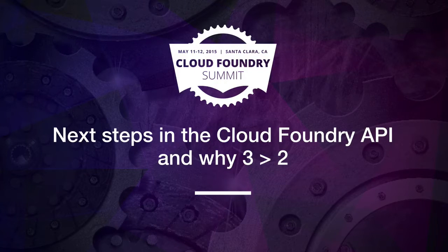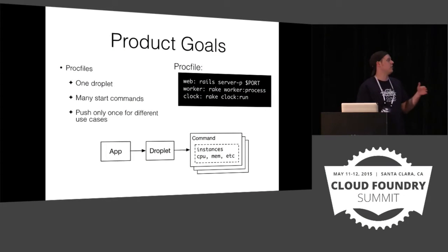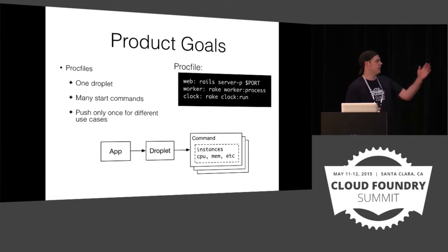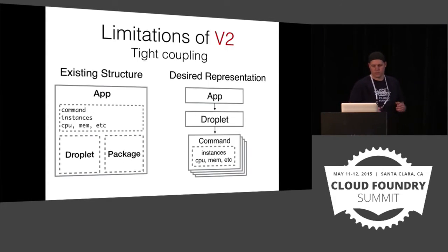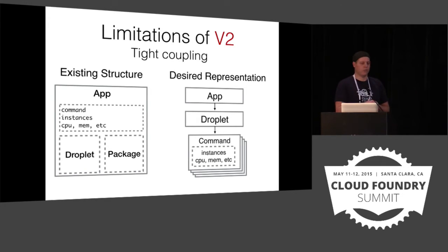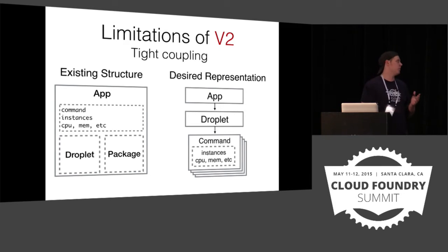With different memory, different CPU, things like that — that's sort of what a proc file is. The idea is you have an app with your droplet, your compiled running bits, and it has a list of multiple commands that can run. Those are sort of what today's app looks like. So when we look at bringing that into V2, we see a limitation: our existing structure doesn't really match the desired representation we want for a proc file.